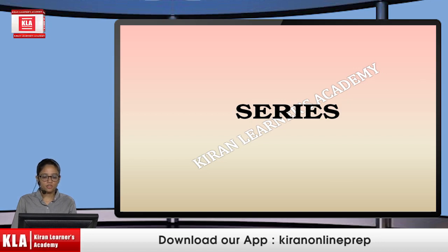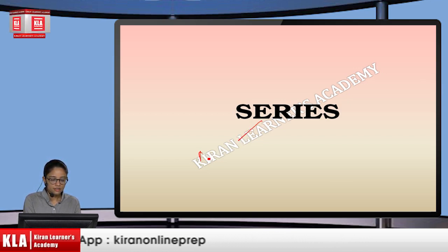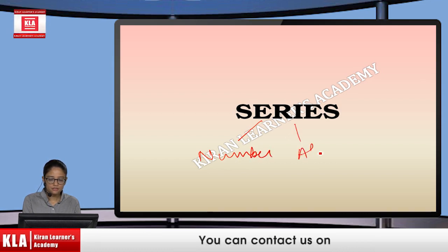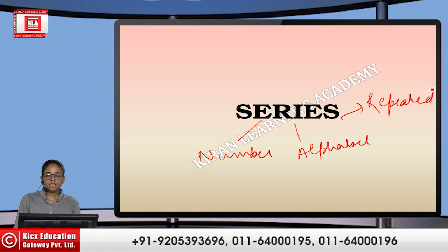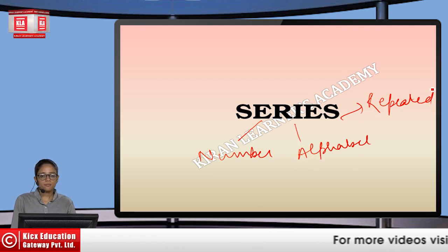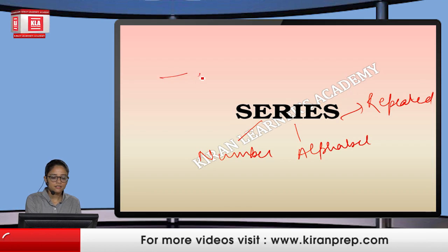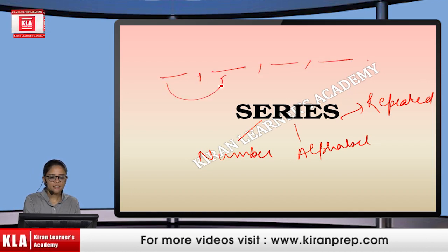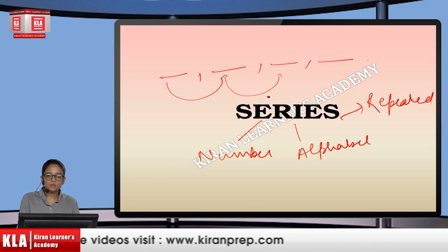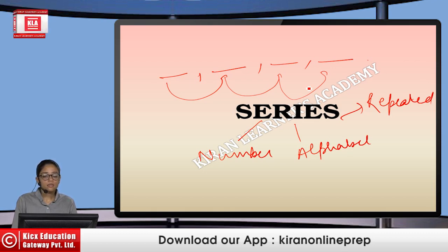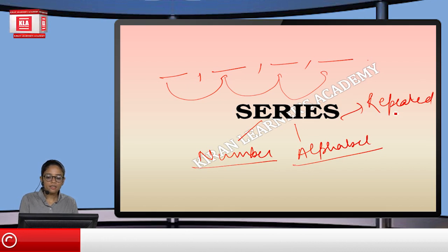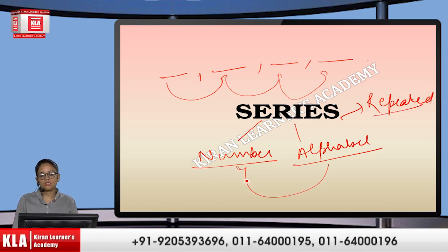In series, we have three types: first is number series, then alphabets, and then repeated series. In number series, we deal with only numbers. There will be some pattern between the given numbers — like one number is related by some function to the second, second to third, third to fourth. All three relations are similar, and in this way we find the next number. This can be based on numbers, alphabets, repeated series, or a combination.